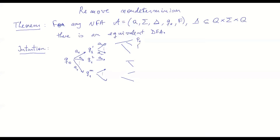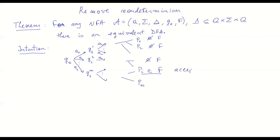In the end, you get to some states, say P1, P2, all the way to Pn. The point of this computation is to check whether there is at least one state that's final. If all of them are non-final, then you are going to have a rejecting computation — the input word is not accepted. But if there is at least one such final state, then just based on that — the fact that you've reached a final state in one of the computations — this gives you an accepting computation.